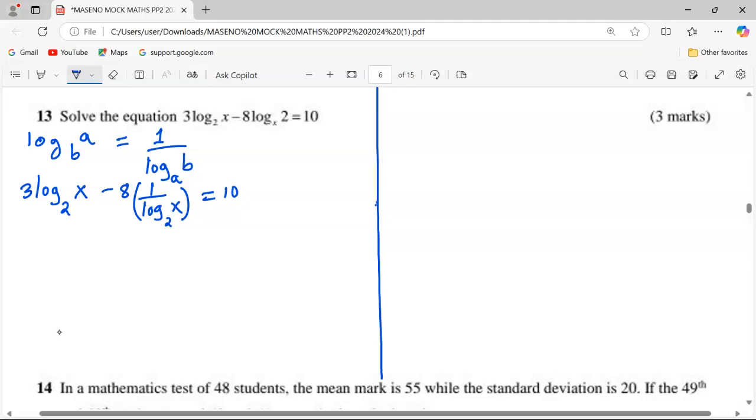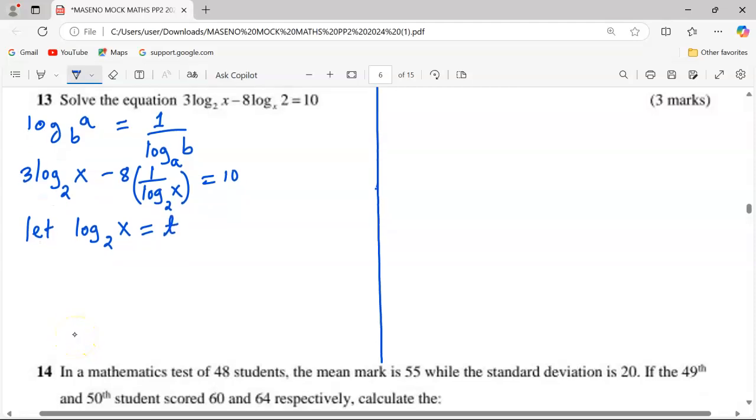Now that the logarithm of x to base 2 is appearing twice, we can let log₂(x) be something like, let's call it t, an unknown, so that 3t - 8(1/t) = 10.